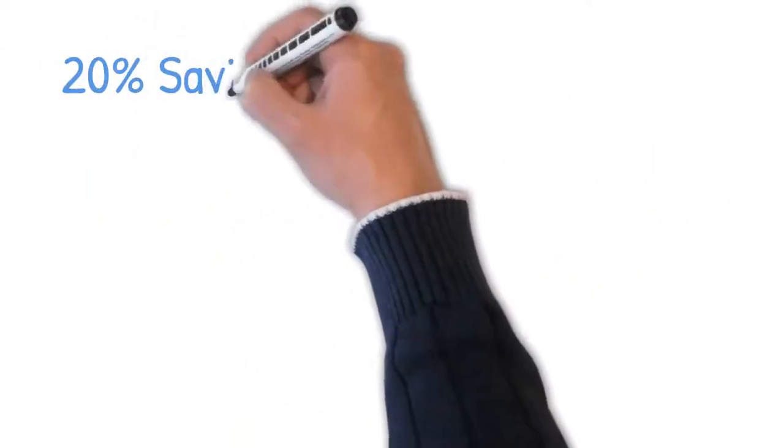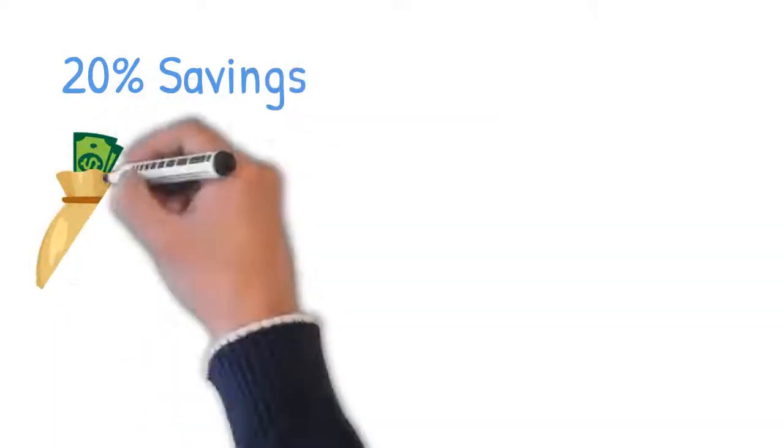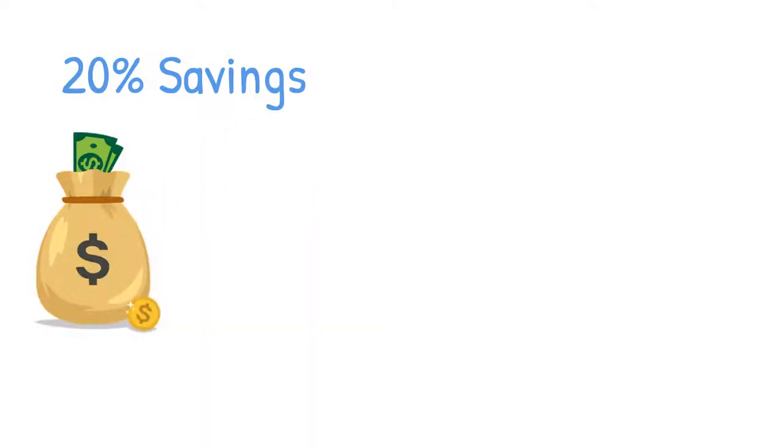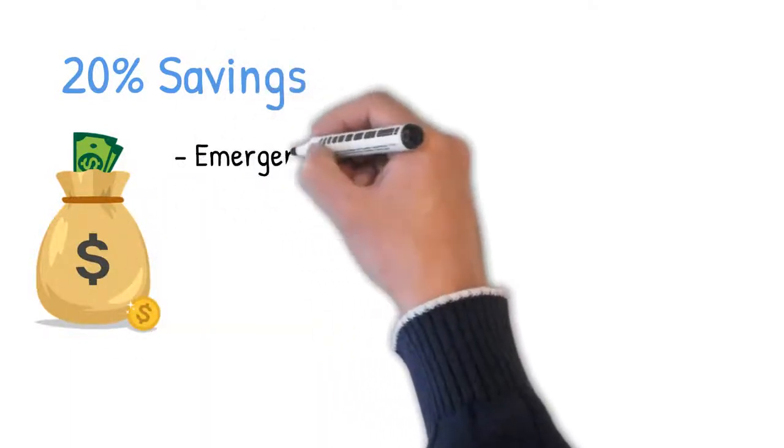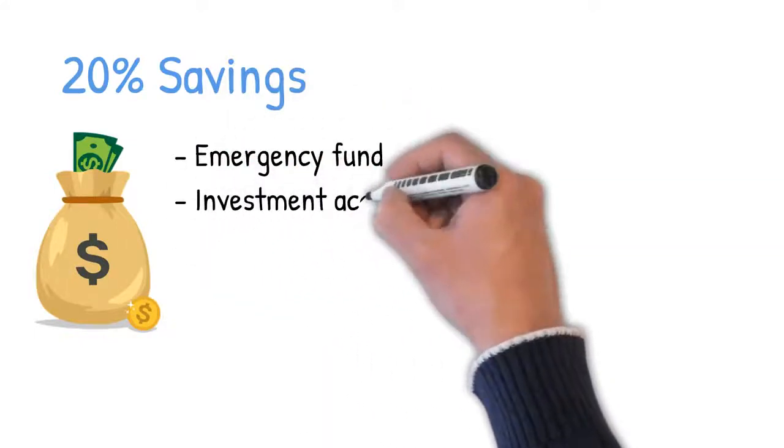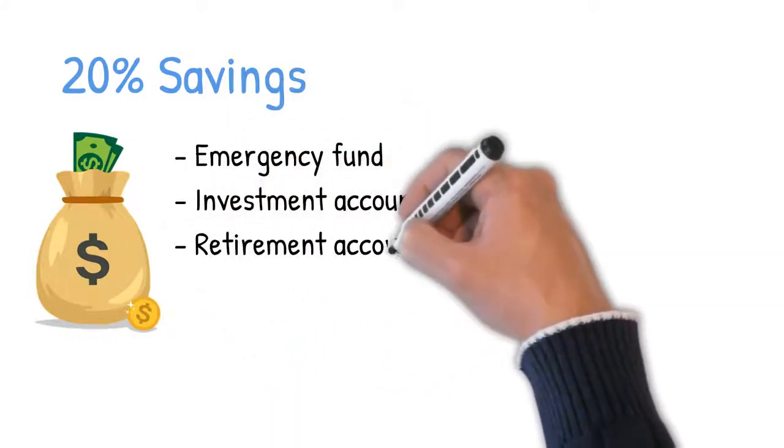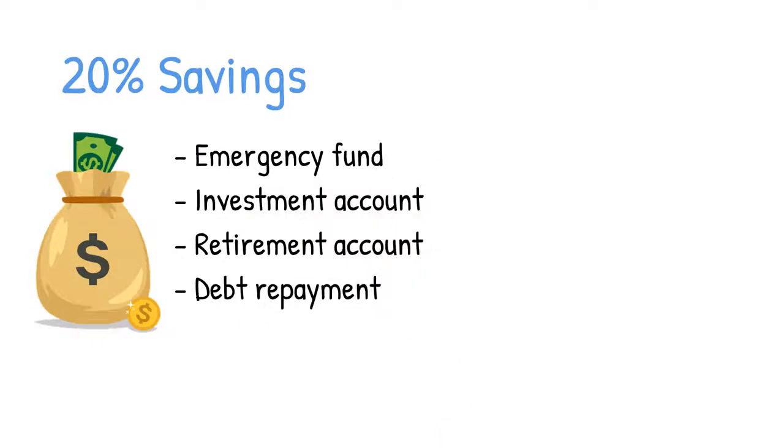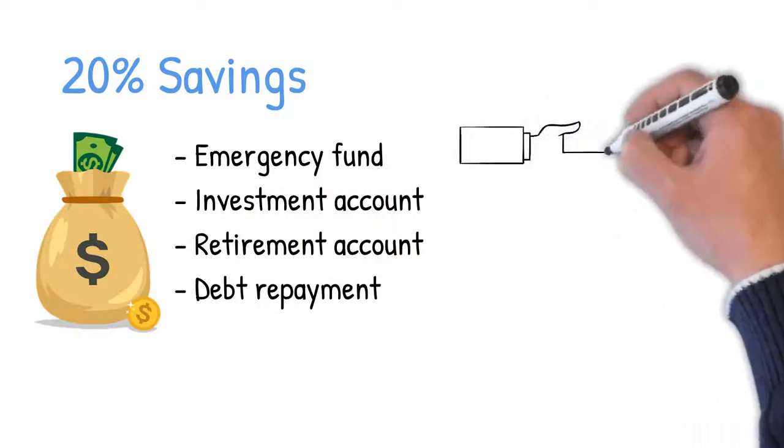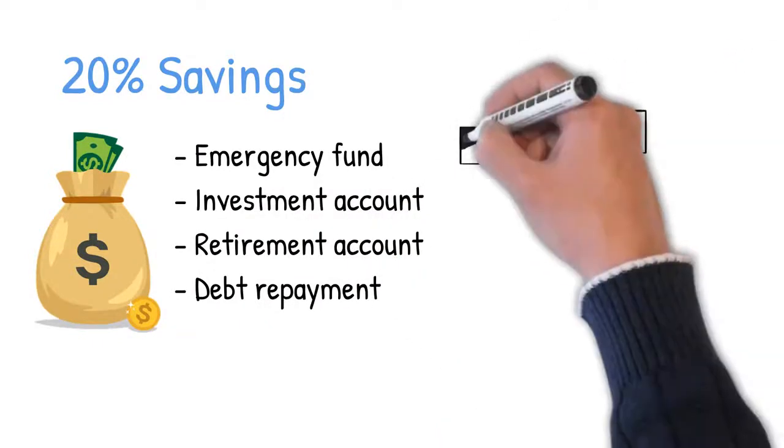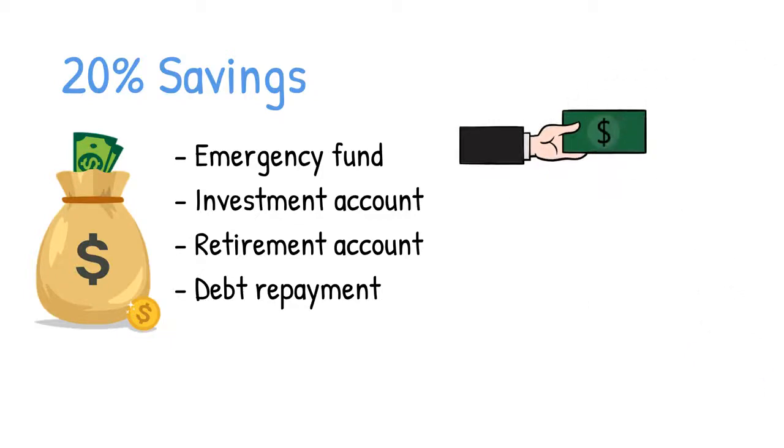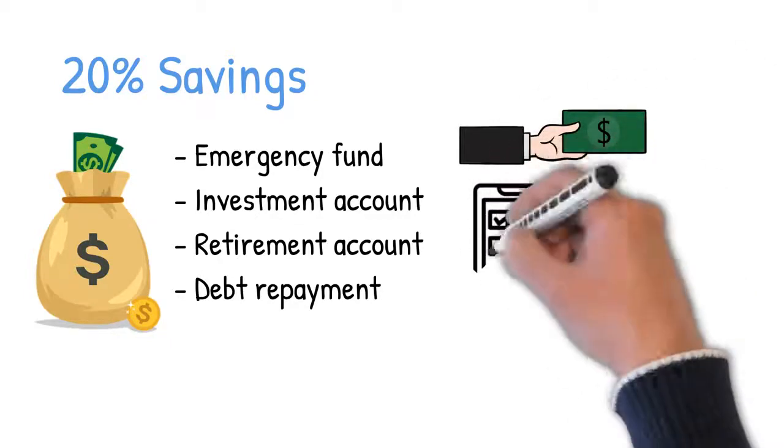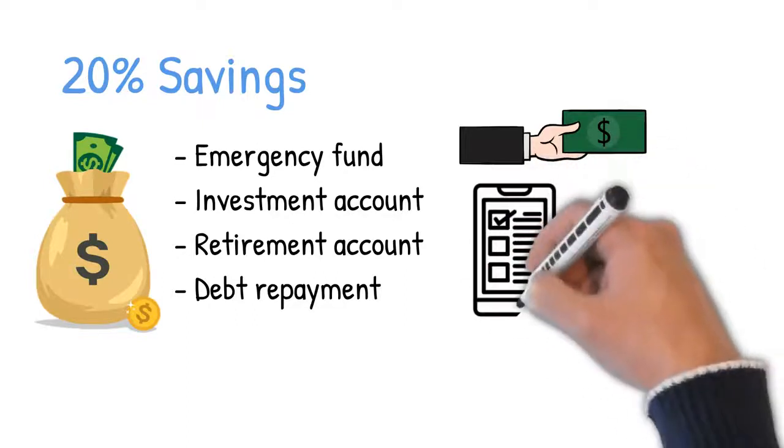20% savings. Lastly, the rule recommends that you take the remaining 20% of your after-tax income and use it on saving. Savings is a broad term that could include an emergency fund, investment account, retirement account, or debt repayment. Whereas minimum payments fall in the needs category, loan payments that reduce your future interest and principal fall in the savings category. The savings bucket list is essential for anyone who wants to prepare for emergencies and retirement.